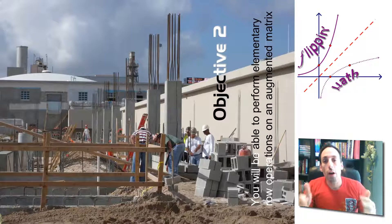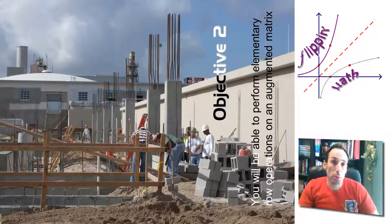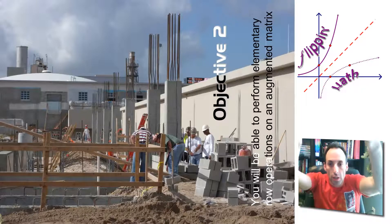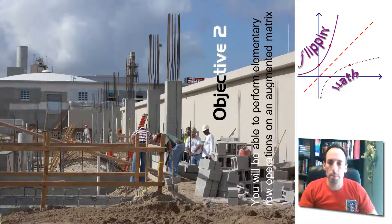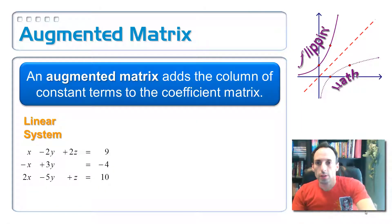And for us, augmented matrix is going to mean that we're going to add a column to our coefficient matrix. These construction workers are adding some columns to the structure here. So an augmented matrix is going to add the column of constant terms from your system of equations to the coefficient matrix.